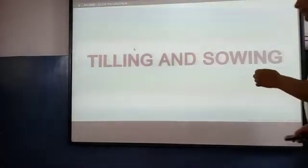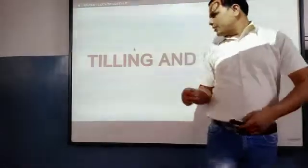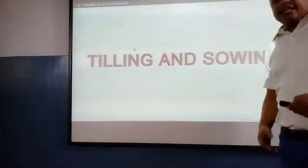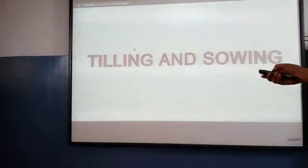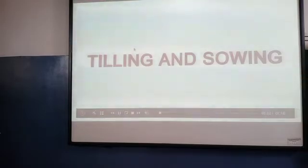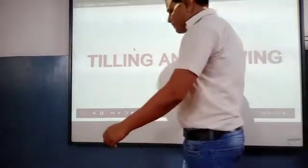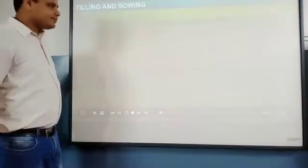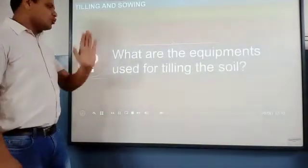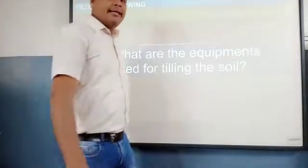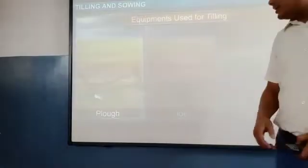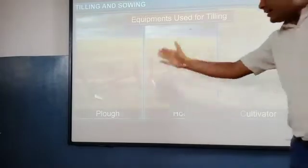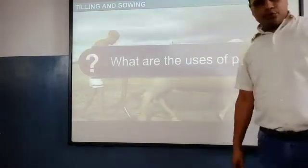After preparation of soil, the next topic is tilling and sowing of seed. Tilling and sowing of seed is the second step of agricultural practices. The equipment used for tilling of soil includes the plow, hoe, or cultivator — these are the three most important tools for cultivation.